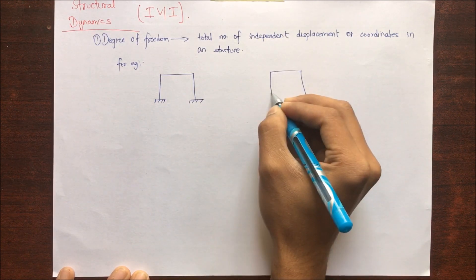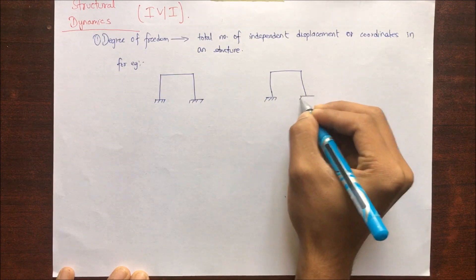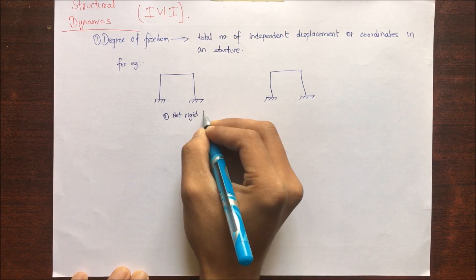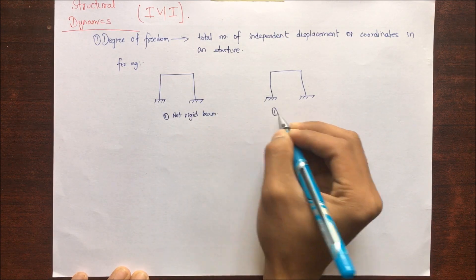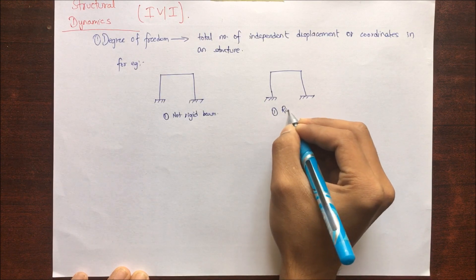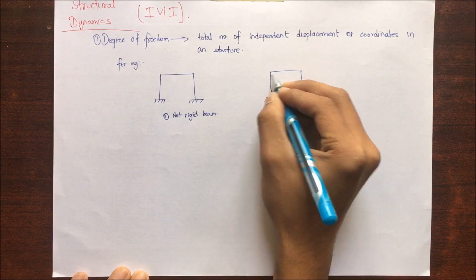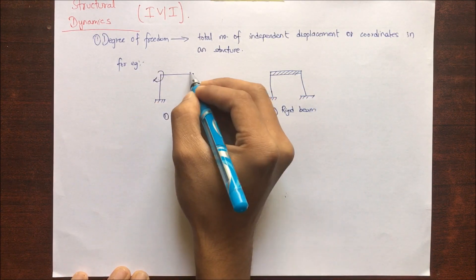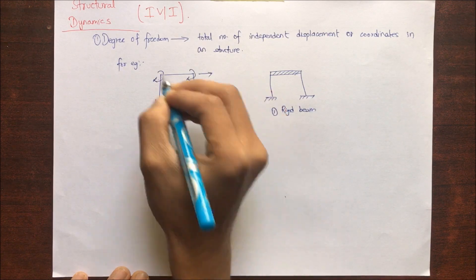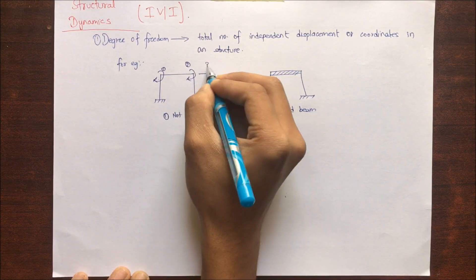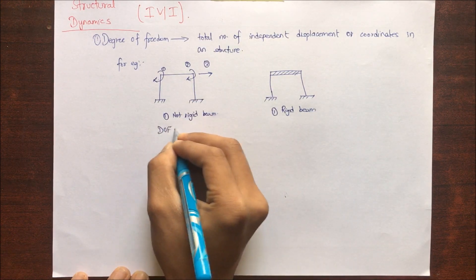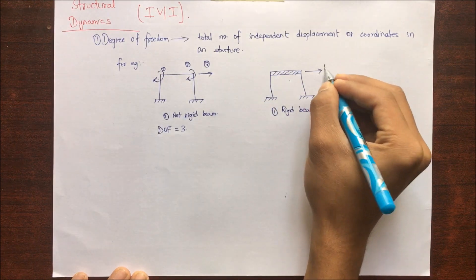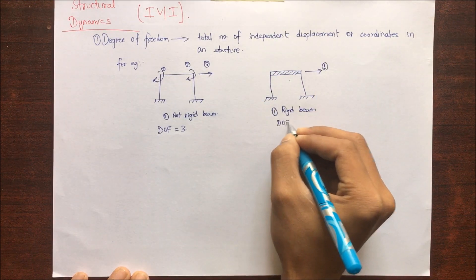Let me clarify degree of freedom using a simple example of a frame system. I'll take two cases: one with a rigid beam and another with a non-rigid beam. For the non-rigid beam, the displacements are one, two, and three — so degree of freedom equals three. For the rigid beam, only one direction of displacement is possible, so degree of freedom equals one.